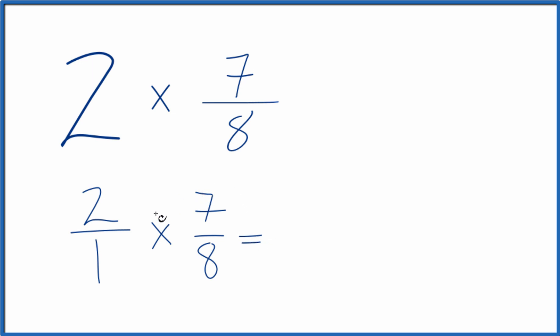When we multiply fractions, we multiply the numerators, then the denominators. 2 times 7 is 14. And 1 times 8, that's 8. We said that was 7 fourths when we simplified it, which equaled 1 and 3 fourths.